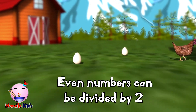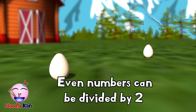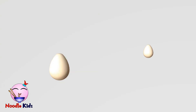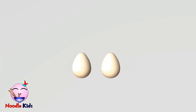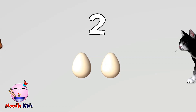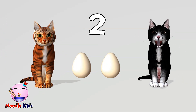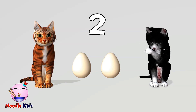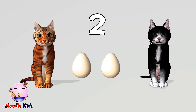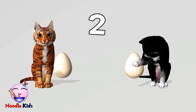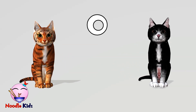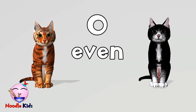An even number is a number that can be divided by two. Here, we have two eggs. Here come two cats. These two eggs can be divided, one for each cat. Is there any egg leftovers? No, which means two is an even number.